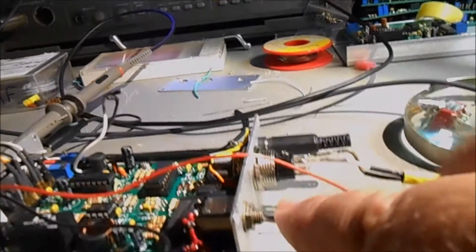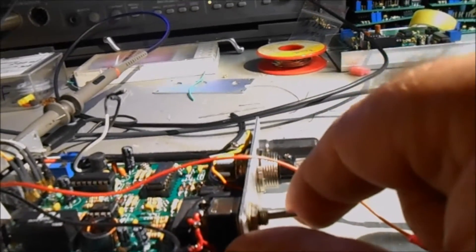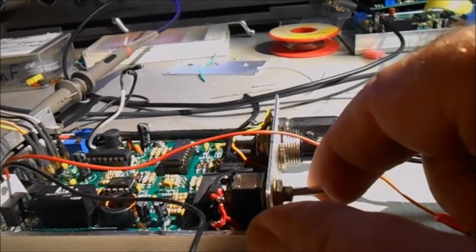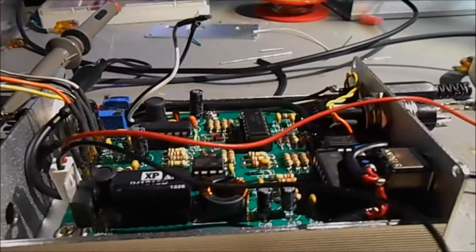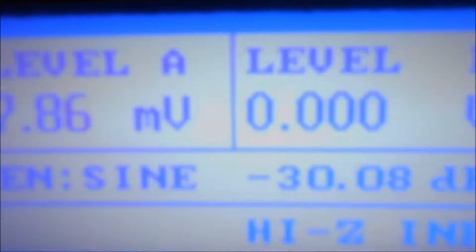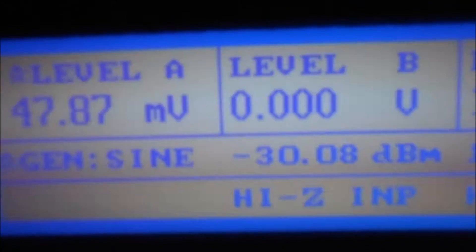We have a switch that can switch bypass mode. OK, at the moment I have minus 30 dBm, as you can see, minus 30 dBm output on the audio precision generator.